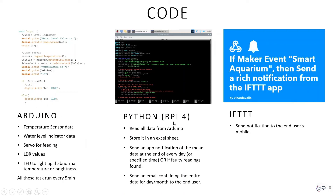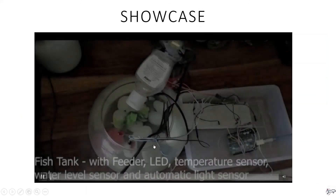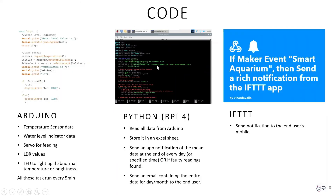The feeder runs every one to three hours depending on the fish type. The Python code stores all data properly in an Excel file and sends a daily notification containing mean values — mean temperature, mean brightness — so you can properly monitor the fish. If a faulty reading occurs, such as temperature suddenly jumping to 45 degrees, you can investigate and use a filtration or air system to cool the aquarium. At end of month, all Excel data is emailed to the user.